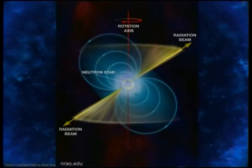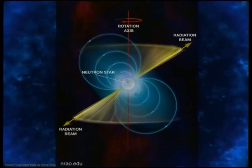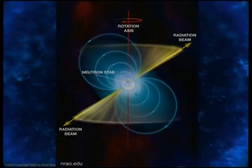Quick question from the audience: does this mean the magnetic axis and the axis of rotation are different? Yes, they are. Here we have an illustrative diagram — an artist's rendition of a pulsar. You have the pulsar in the center with the electromagnetic waves emanating from it. You can see the rotation axis going up and down, and then the axis of emission aligned with the magnetic axis going at a different angle.